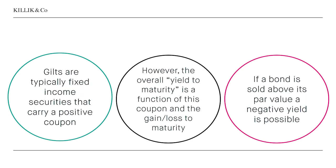Gilts typically carry a positive coupon. So how can you have an instrument with a positive coupon but a negative overall yield? The answer is that its overall yield to maturity is a function of the coupon and any gain or loss to maturity — loss being a key word here. And if a bond is sold above its par value, even with a positive coupon, a negative yield becomes possible.